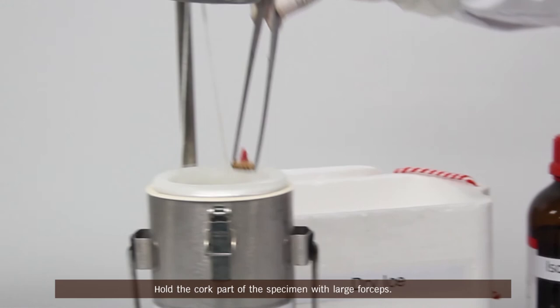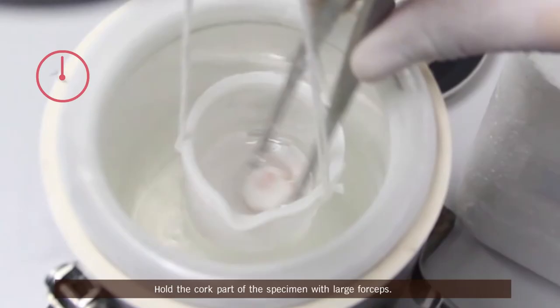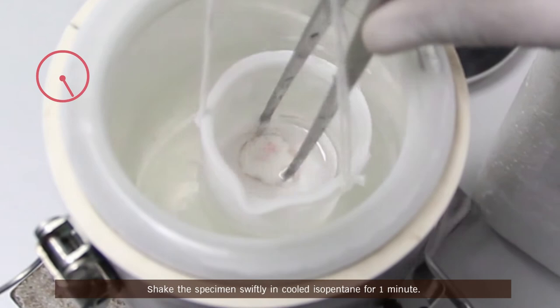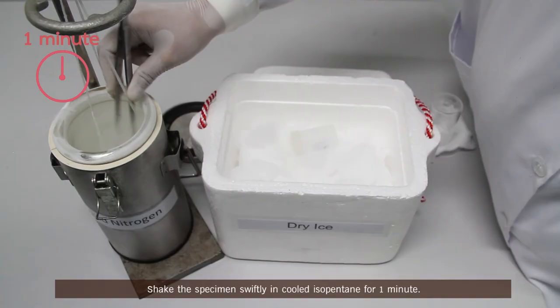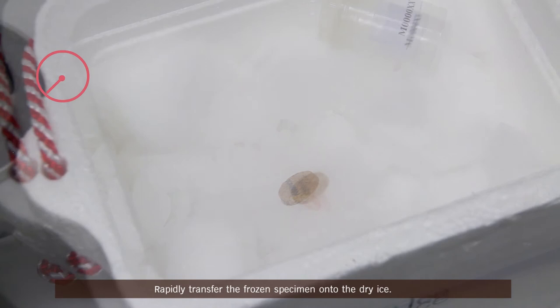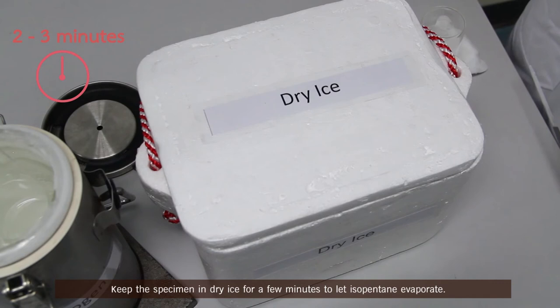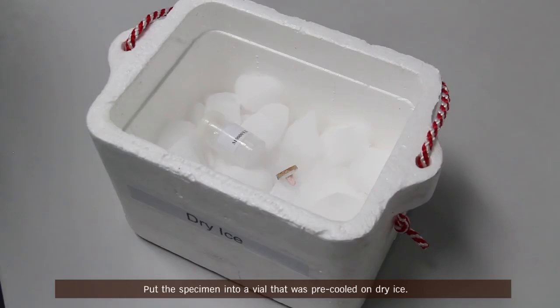Hold the cork part of the specimen with large forceps. Shake the specimen swiftly in cooled isopentane for one minute. Rapidly transfer the frozen specimen onto the dry ice. Keep the specimen in dry ice for a few minutes to let isopentane evaporate.